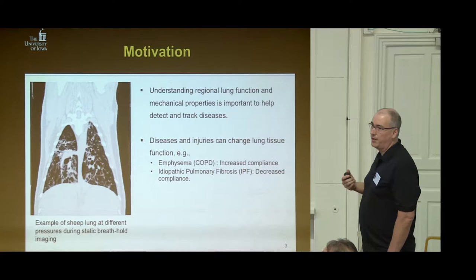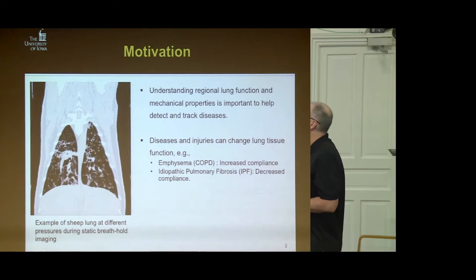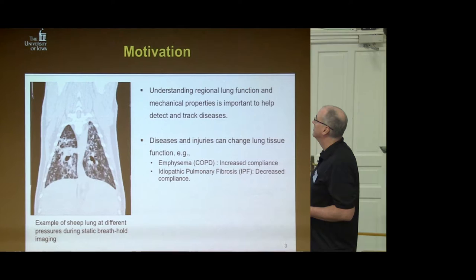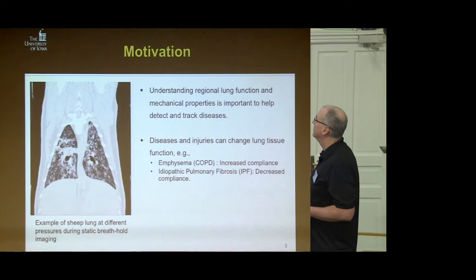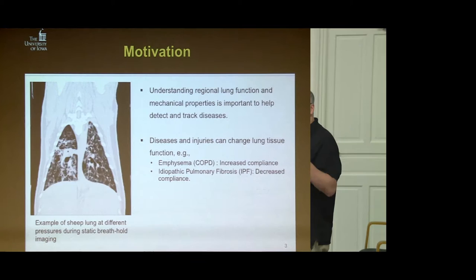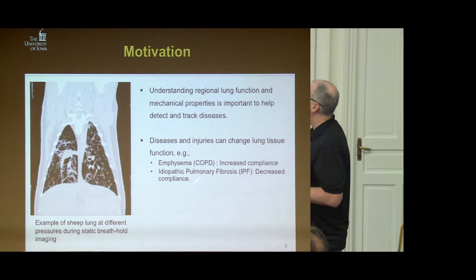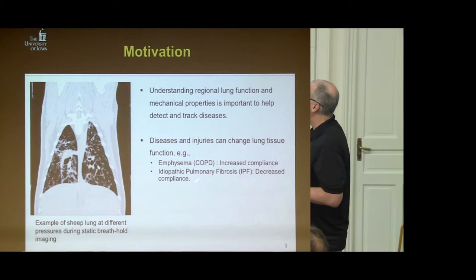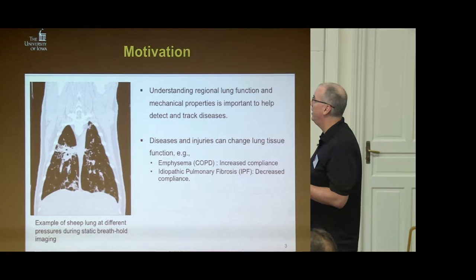If we can do that, we can track disease and see if treatment is working. Disease changes the function of the lung. For someone who has been smoking a lot, they may have chronic obstructive pulmonary disease or emphysema, which gives the lung increased compliance — it's more stretchy. On the other end, pulmonary fibrosis gives decreased compliance. These different conditions affect different parts of the lung, and the goal is to find where those regional differences are.